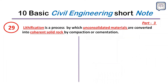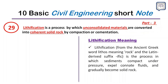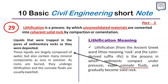Point 29: Lithification is the process by which unconsolidated materials are converted into coherent solid rock by compaction and cementation. The word comes from the ancient Greek 'lithos' meaning rock. Sediments compact under pressure, expel connate water (liquid trapped in pores of sedimentary rock as it was deposited), and gradually become solid rock. As rocks are buried and undergo lithification, connate fluids are usually expelled.